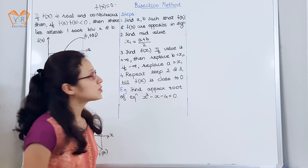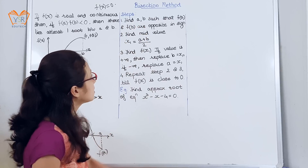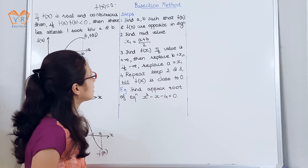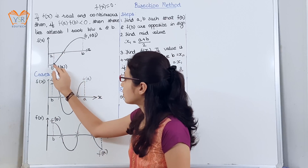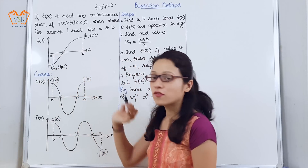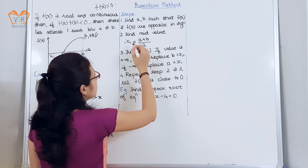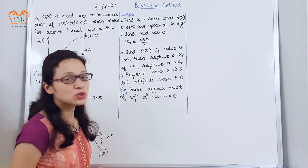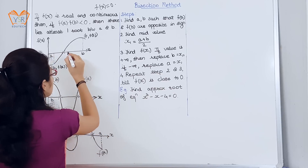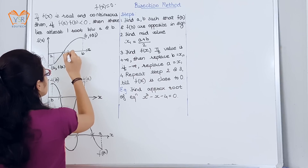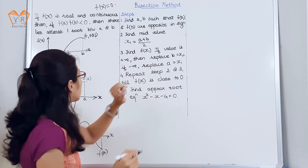We will now see the steps for the bisection method. Step 1: find a and b such that f(a) and f(b) are opposite in sign — if f(a) is negative, f(b) should be positive. Step 2: find the mid value x1 = (a + b) / 2. We can assume x1 is the mid value. Step 3: find f(x1).